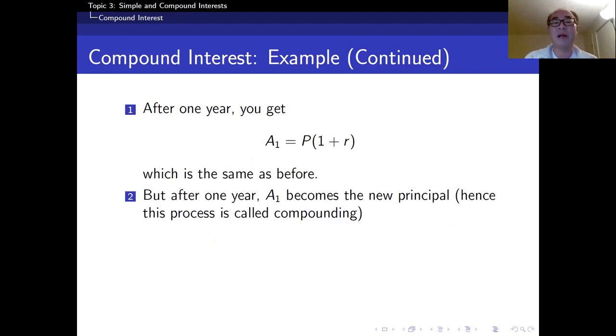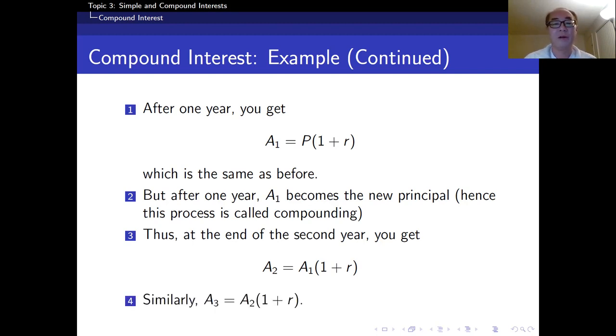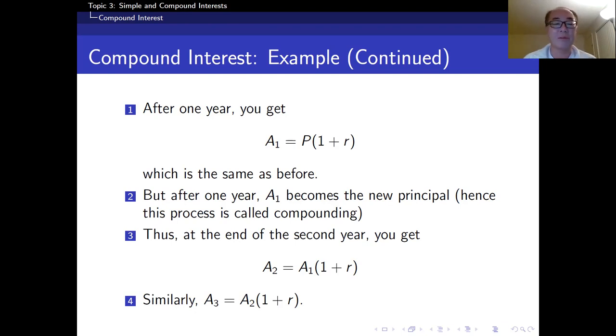But after one year, what's going to happen is that this A sub 1 becomes a new principal. That's why it's called compounding. Look at this: A sub 2 equals A sub 1 times (1 + r). So (1 + r) is the same, but now for the second year, the principal is now A sub 1, not P. Similarly, for the third year, you're going to have A sub 3 equals A sub 2 times (1 + r). Here again, the principle is A sub 2, not P.